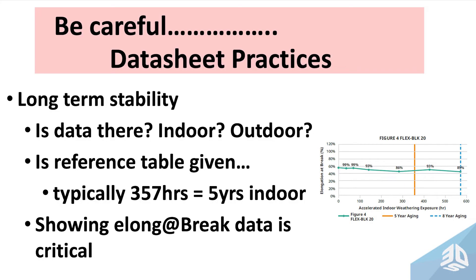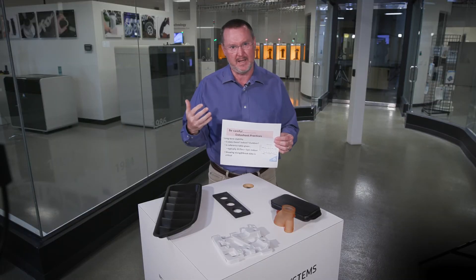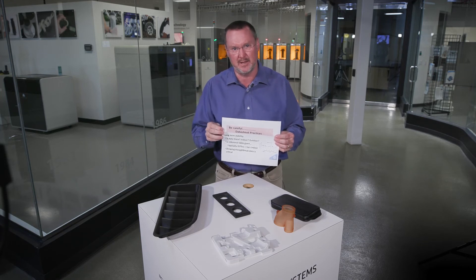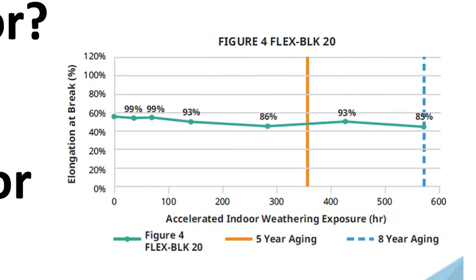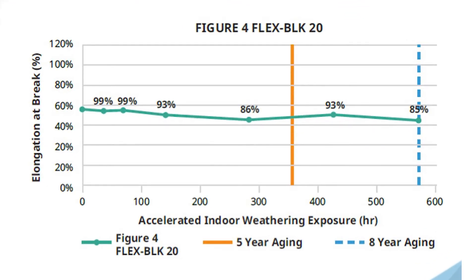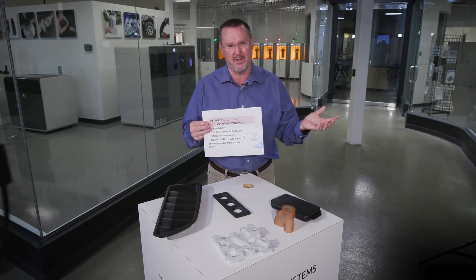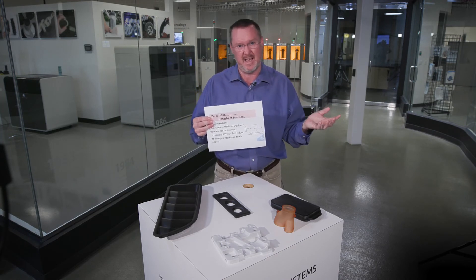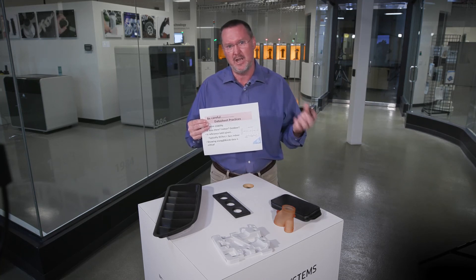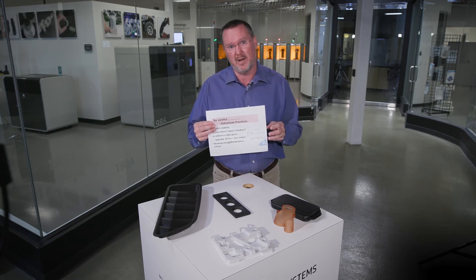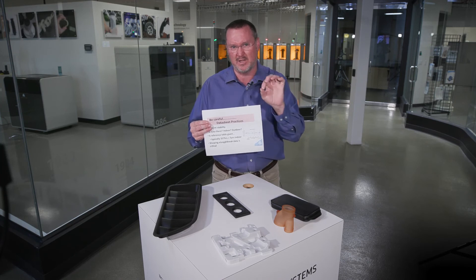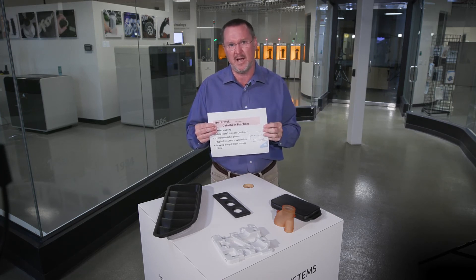When you look at long-term environmental stability, you won't see that data everywhere — even injection mold plastics are often formulated specifically for it. At 3D Systems, when we talk about production plastics we always include a discussion on long-term environmental stability. There are specific ASTM tests done in weatherometers, and you should look at the reference tables to understand how far the testing went. For instance, testing to 96 hours doesn't give a lot of information, but 357 hours equates to about five years of indoor long-term stability — which gives a real understanding of when the material starts to degrade.